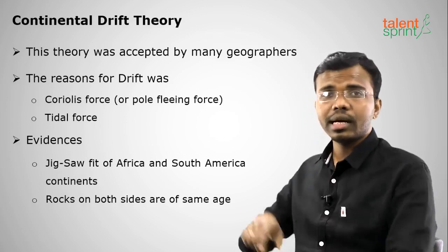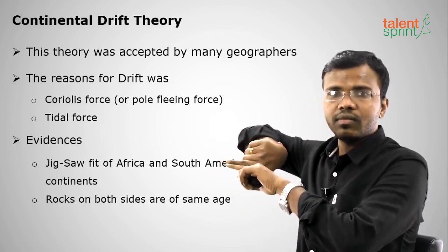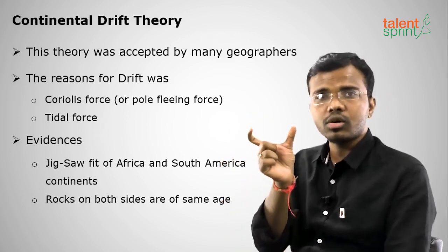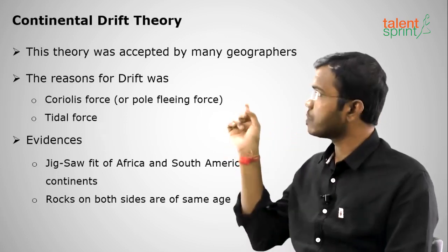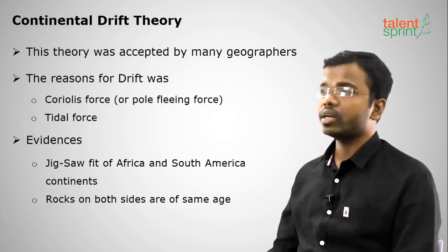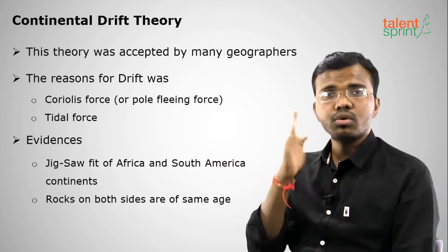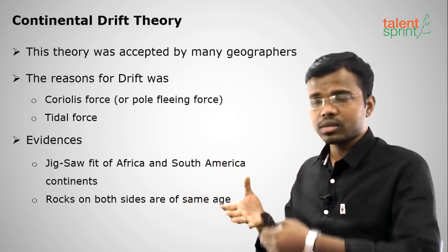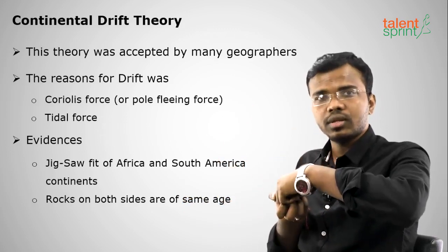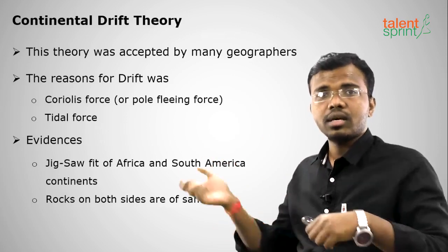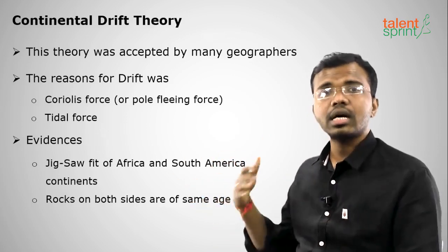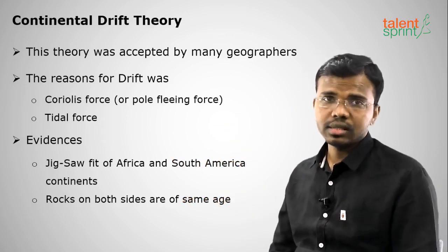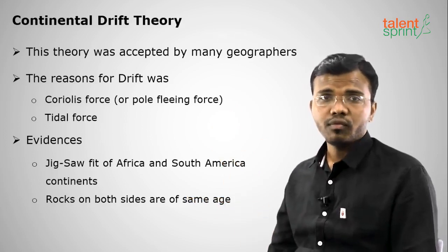Evidence for the theory: South America and Africa look as if they were once joined — this is called the jigsaw fit. They are now separated due to continental drift. Additionally, rocks of the same age are found on both sides of South America and Africa. Australia and India were both part of Gondwana Land, and fossils of the same animals of the same age are found in both.